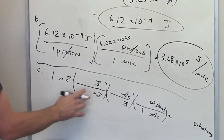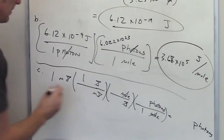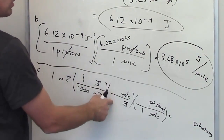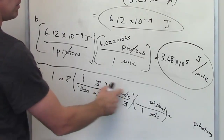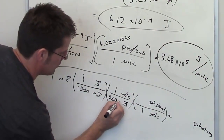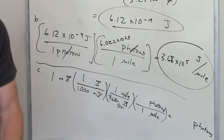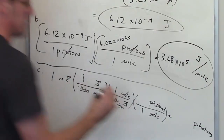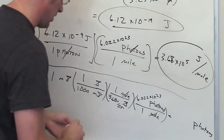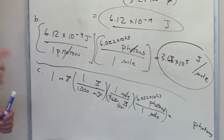Now I throw in the correct numbers. There are 1,000 millijoules in one joule — there are 1,000 milli-anythings in the base unit. From Part B, there are 3.68 times 10 to the 5th joules per mole. And Avogadro's number — 6.022 times 10 to the 23rd photons per mole — lets me relate moles to individual photons. I often joke with students that Avogadro's number also happens to be a band.